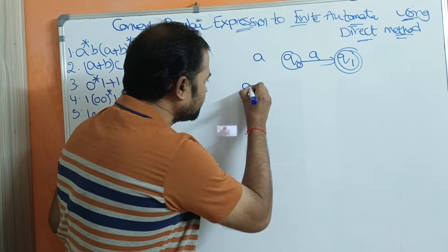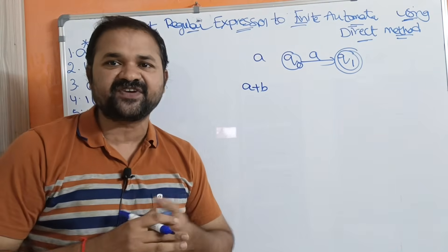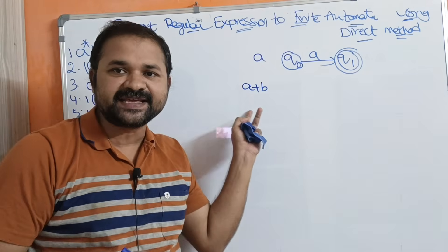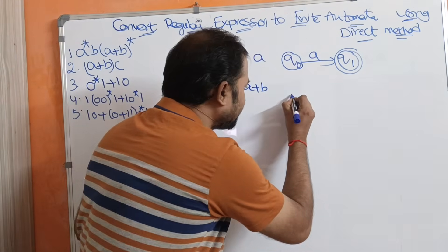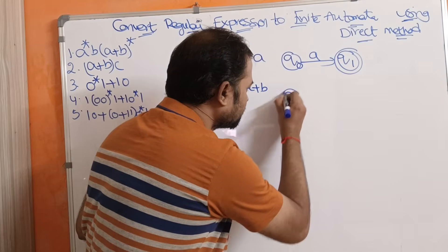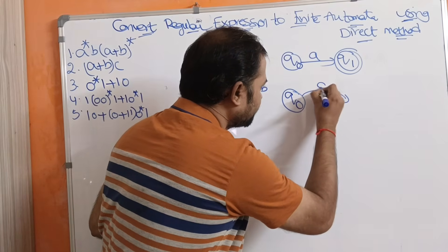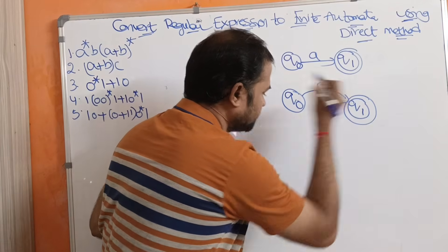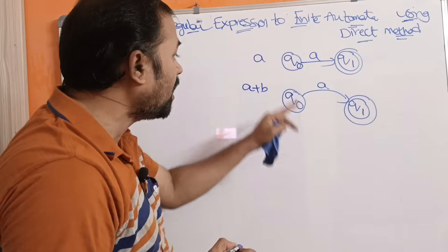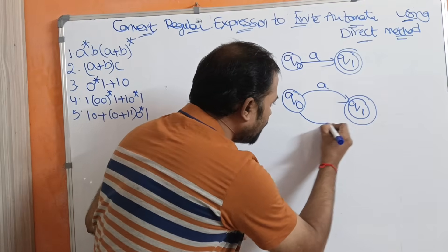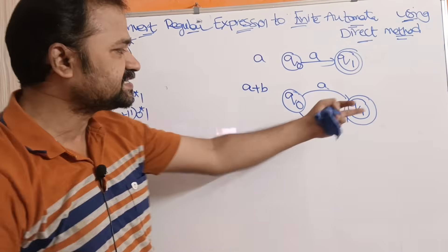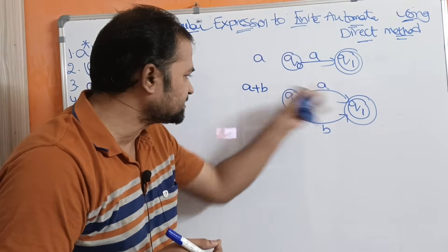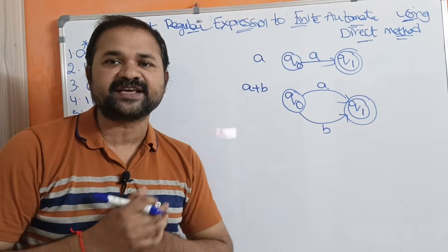Now let us see the next regular expression: A plus B. Plus stands for the union operation, so union means it may be either A or B. Let the current state be Q0. Q0 on A goes to the next state — let that be the final state. Likewise, Q0 on B also goes to the final state Q1. This is the finite automata for the regular expression A plus B.